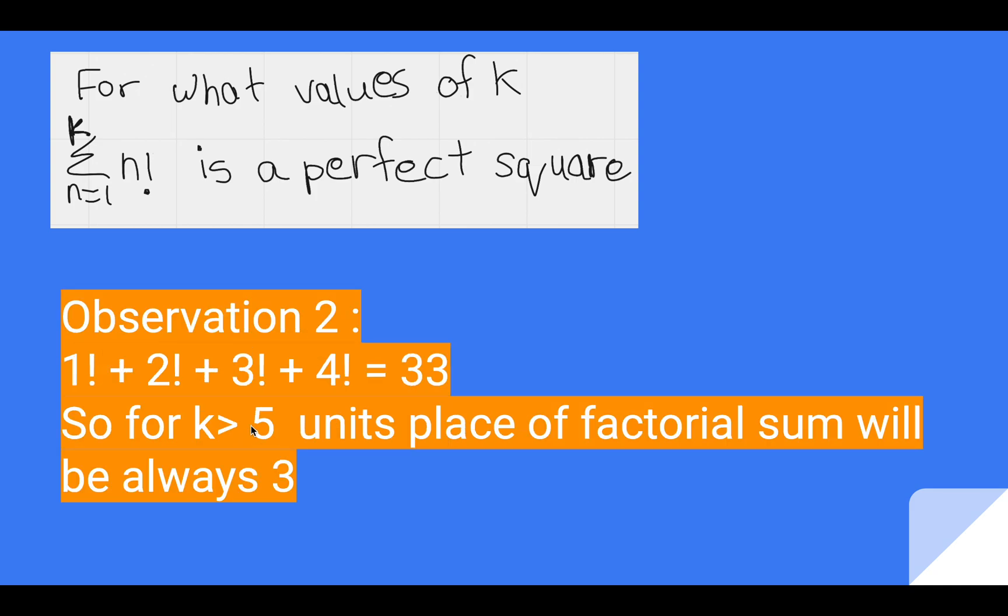And what happens for k greater than equal to 5? Units place won't change because adding 5 factorial, 6 factorial, 7 factorial, everything units place is 0. So units place of the result won't change. It will still remain 3. So units place of any summation where k is greater than equal to 5 or 4, units place is going to be 3.